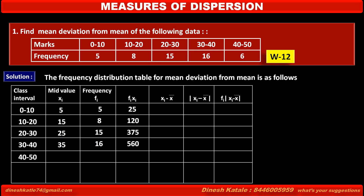The fifth class interval is 40 to 50. So its mid-value is (40 + 50) / 2 = 90 / 2 = 45. Its frequency is given as 6. So the product fi·xi is 45 × 6 = 270.